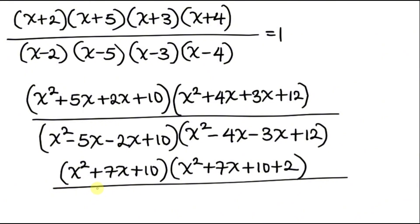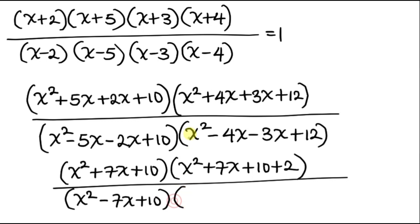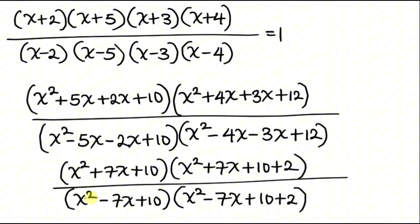Doing the same thing to the denominator: we have x² - 5x - 2x + 10 = x² - 7x + 10. Times the next bracket: x² - 4x - 3x + 12 = x² - 7x + 10 + 2. So you notice that what we have in the first bracket is common to the second bracket on the denominator as well. This is equal to 1.